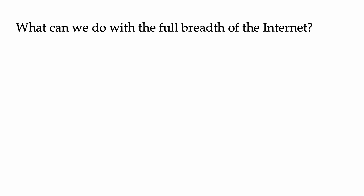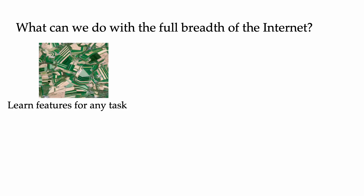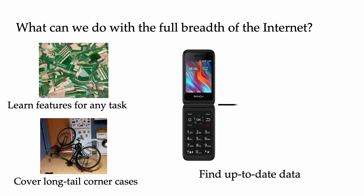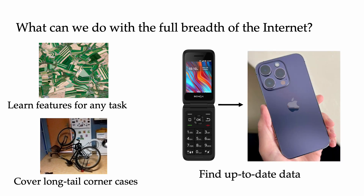So what can we actually do with the full breadth of data on the Internet? For one, we can learn features for any task, even those that are out of the distribution of the most popular pre-training datasets. We can also acquire the data necessary to cover the long-tail corner cases we might encounter at test time. But maybe most importantly, we can find up-to-date training data so that our models are always aware of what's happening in the real world.